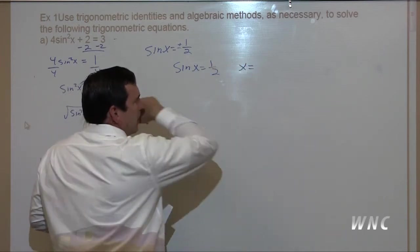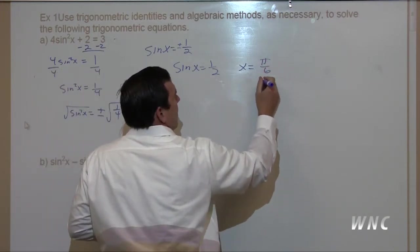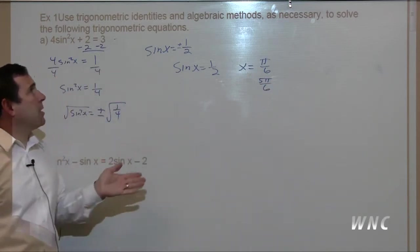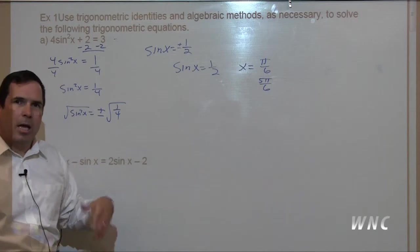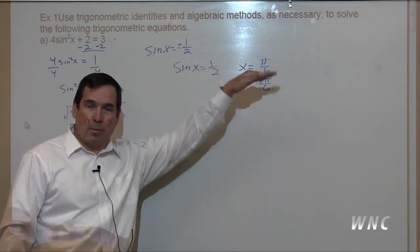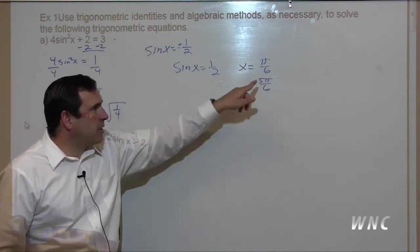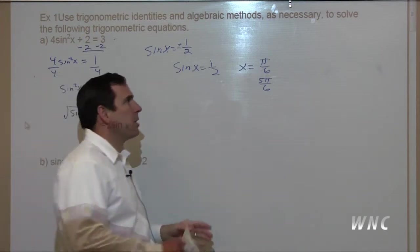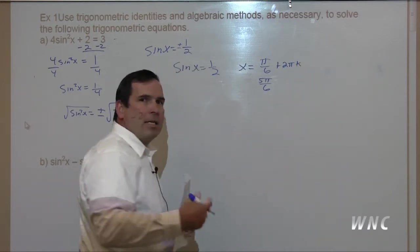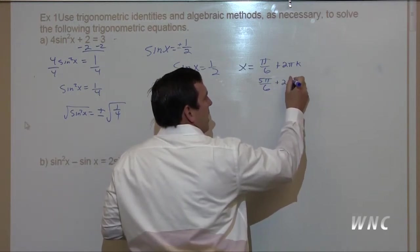Sine of x equals one-half when x is pi over six and five pi over six. Now, it wants all the solutions — sine is a periodic function, it's going to keep going and hit one-half a lot. So not just pi over six and five pi over six, but two pi later as well. So: pi over six plus two pi k, and five pi over six plus two pi k, where k is any integer.